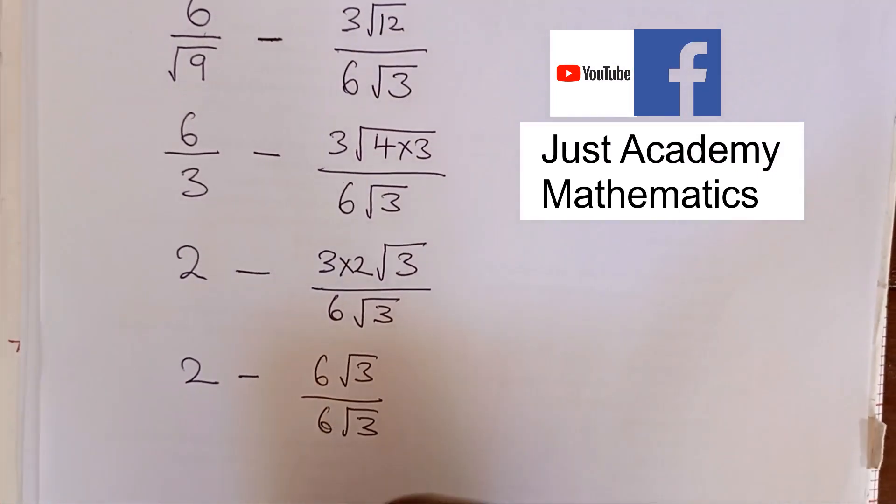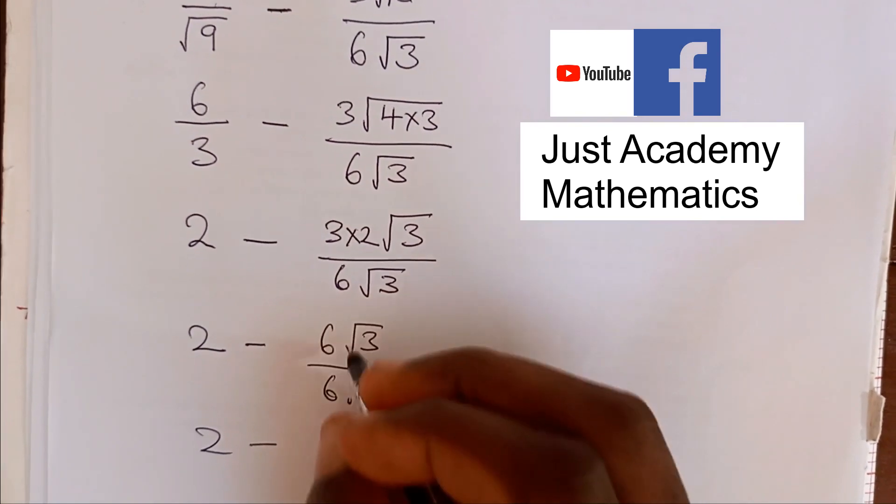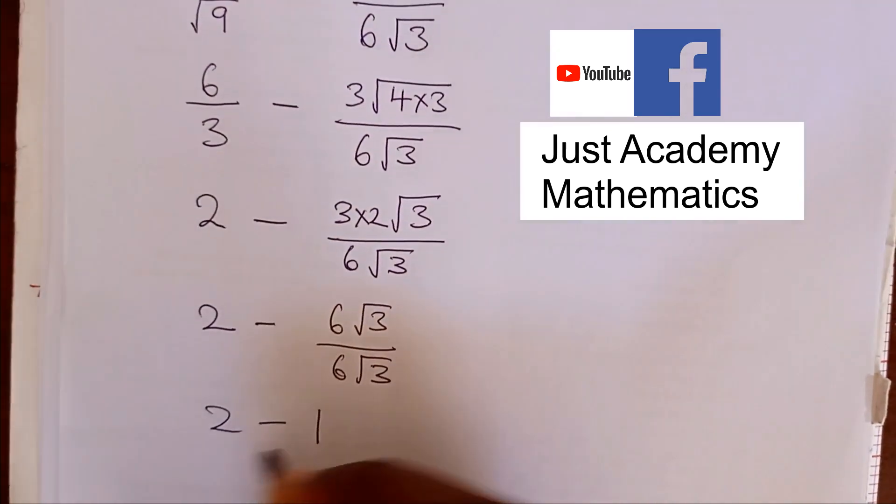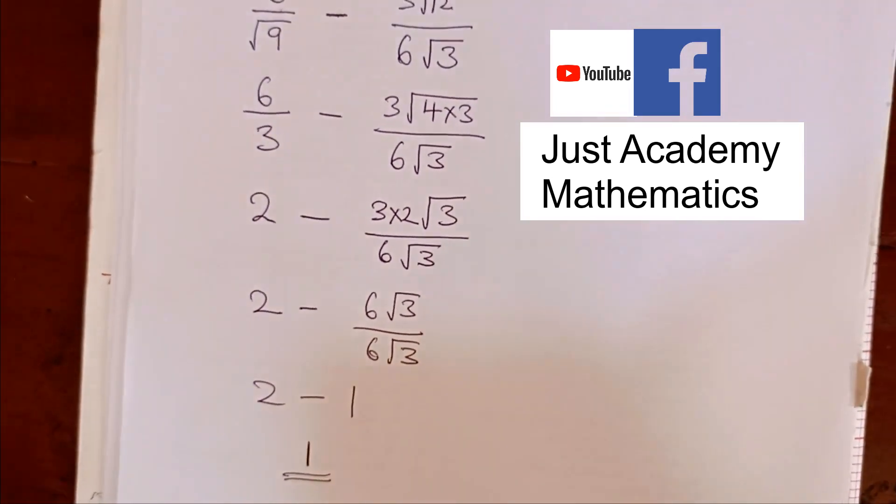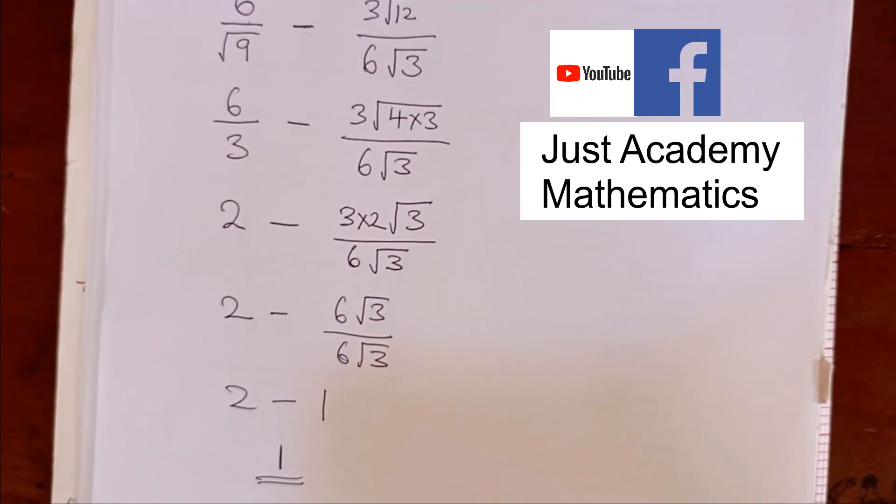Obviously, we are going to have this divide by this to give us 1, and 2 minus 1 is 1 as your answer. So this is the procedure we have decided to take. Like I said, you can use another method and you will still get 1.